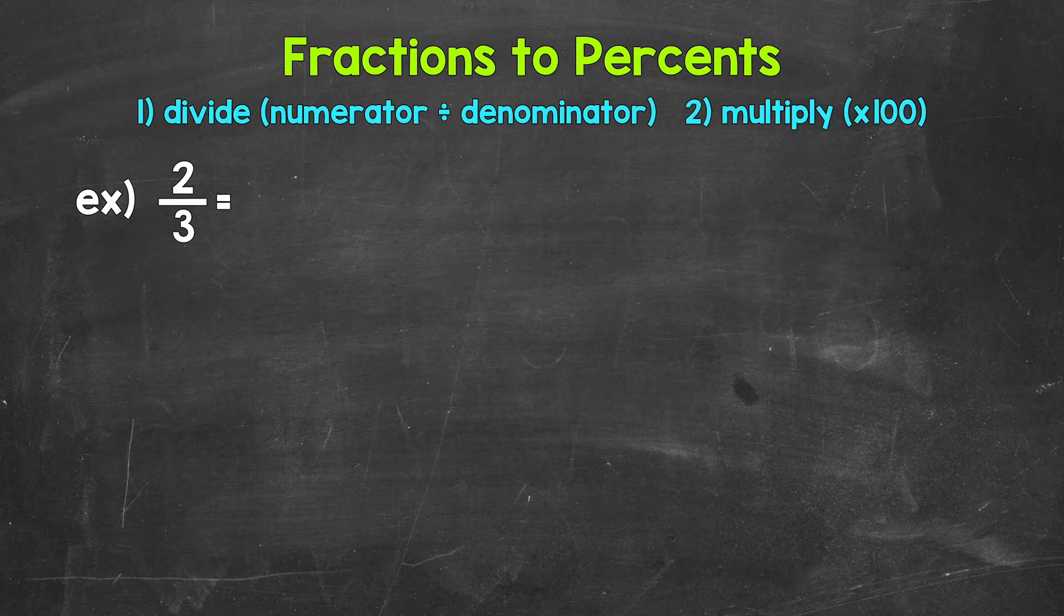Now, when we convert a fraction to a percent, we can start by dividing the numerator, the top number of the fraction, by the denominator, the bottom number of the fraction. This will give us a decimal.